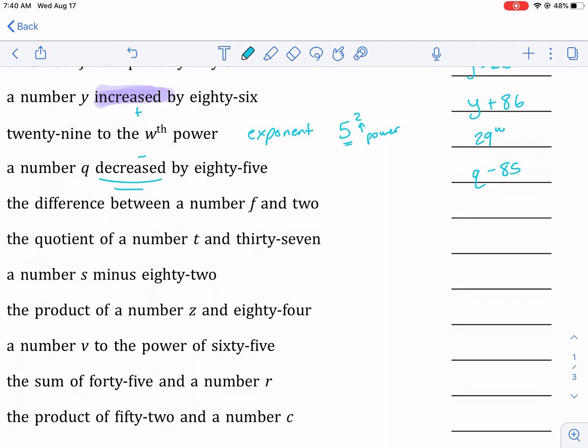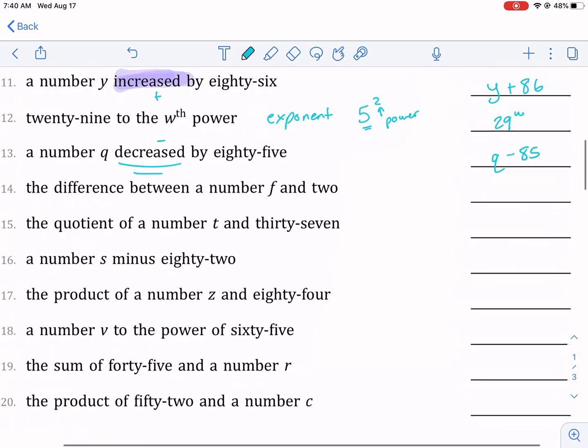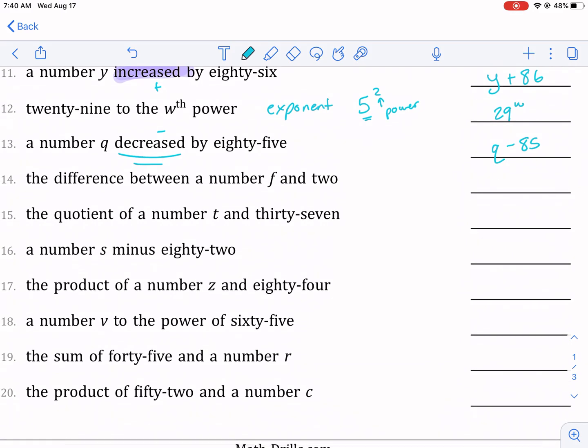The difference between a number f and two—we talked about this one already. A difference between, and then here is this listed—that means f needs to go first and two needs to go second, because that's the order. This one's listed first, that one second—that's the order.